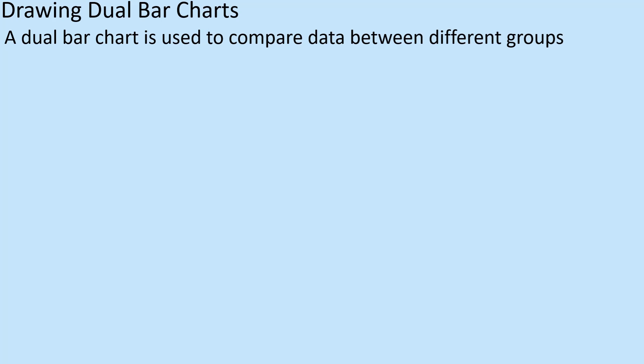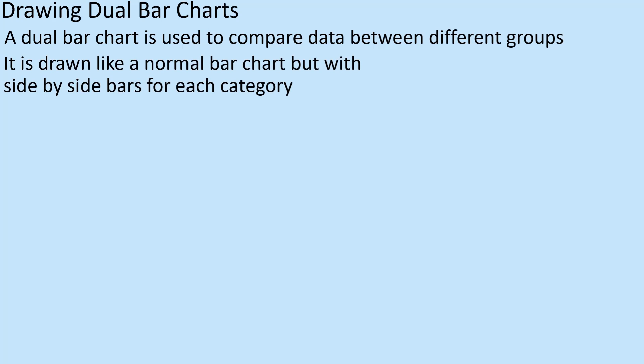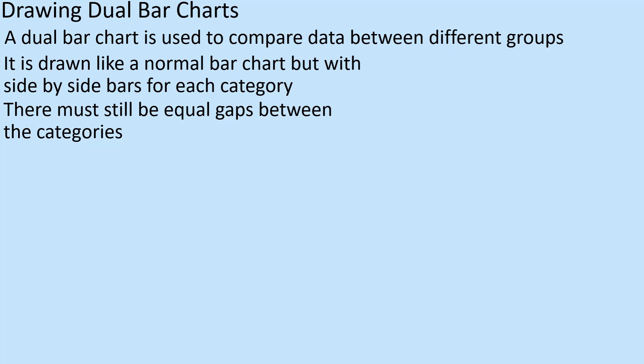There are loads of other criteria where it's one versus the other - maybe adults versus children. It's drawn like a normal bar chart, but we put bars side by side for each category. There must be equal gaps between the categories - that's important. Don't worry about the gaps between the two bars in a group, but certainly between the different categories.